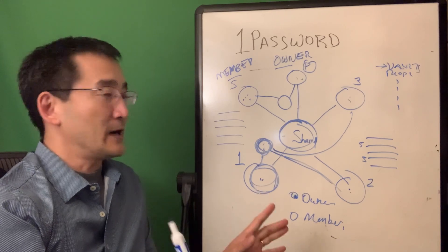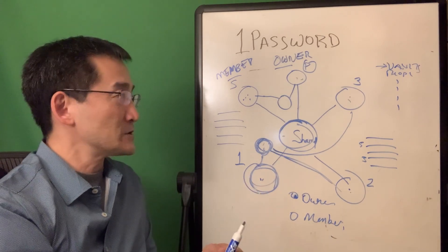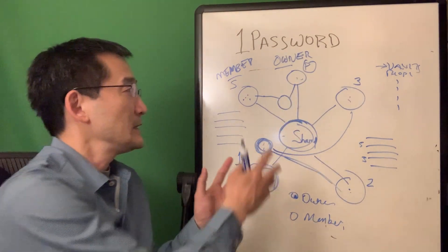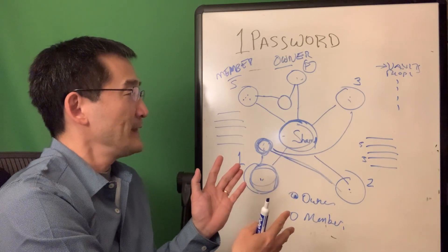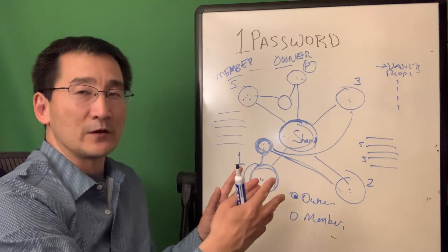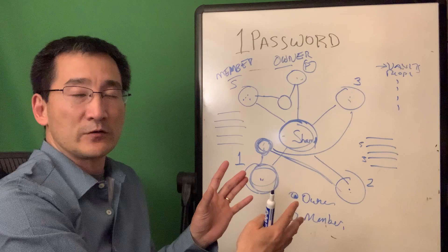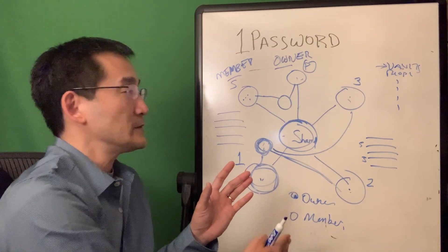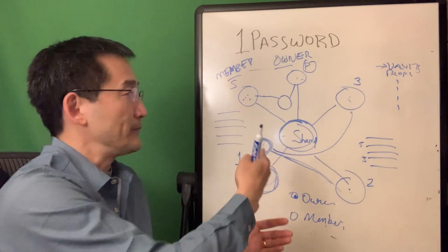I hope you understand the structure here. The primary has the ability to see everything. They invite everyone they'd like to invite, they can administer the vaults, see all the vaults, manage the ownership level, manage the people, and invite new people to the family group.